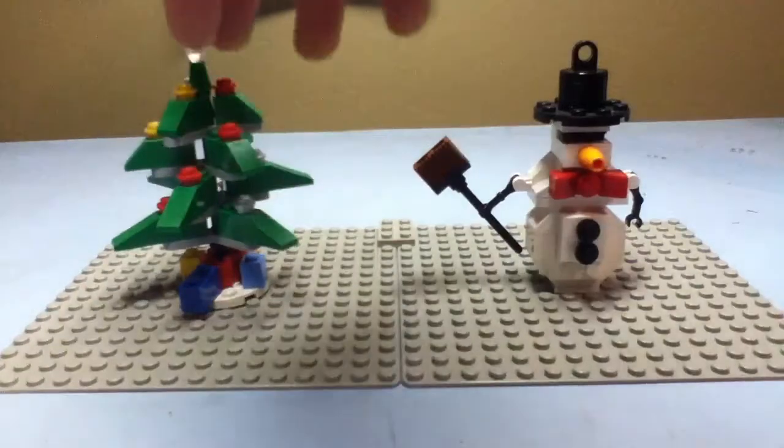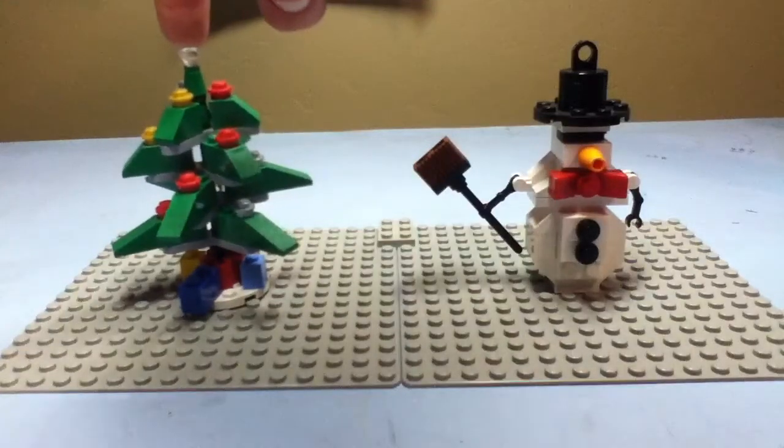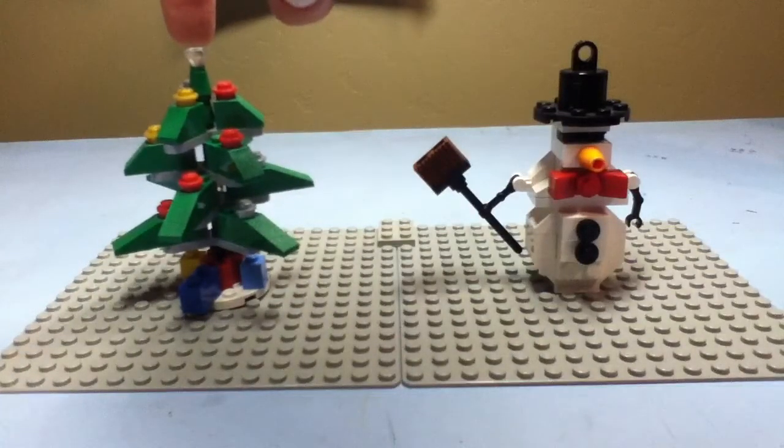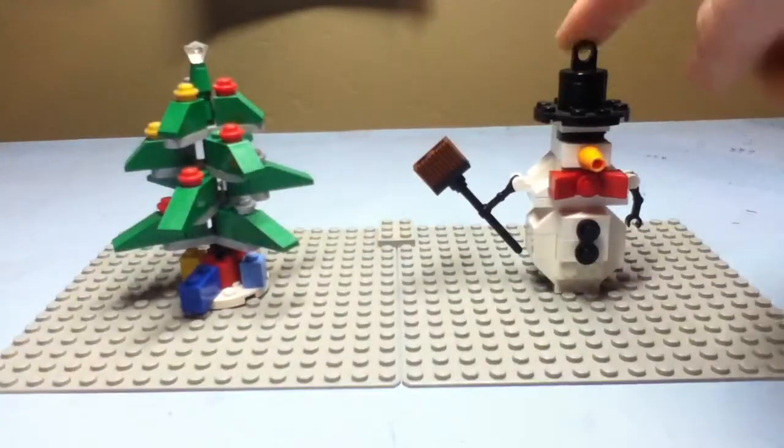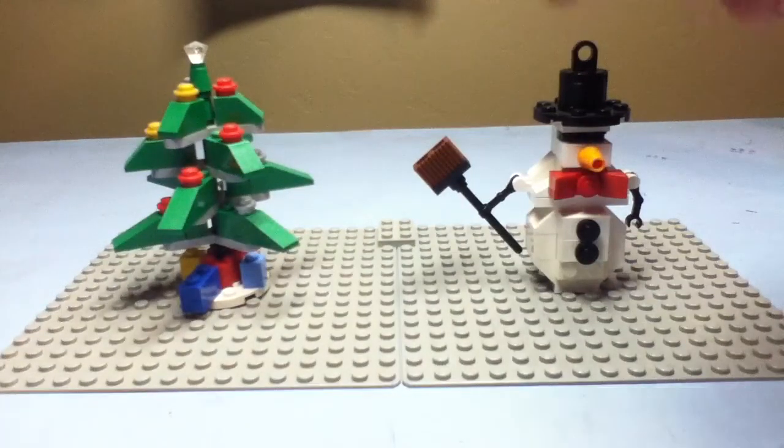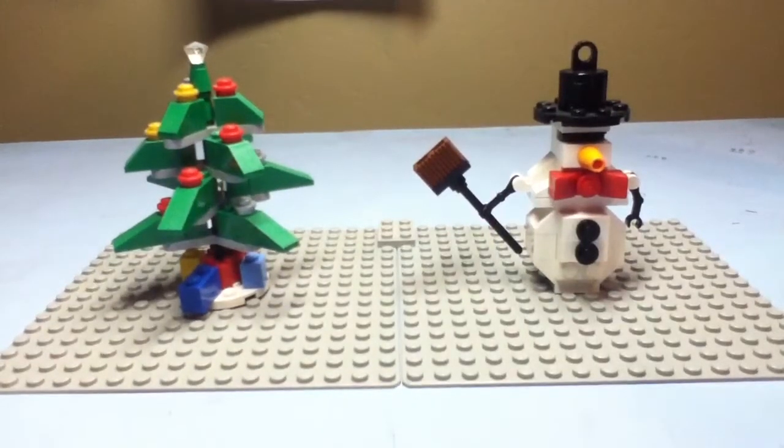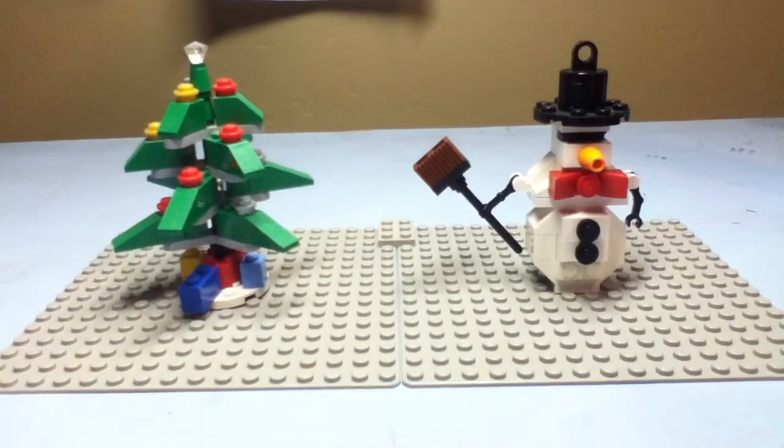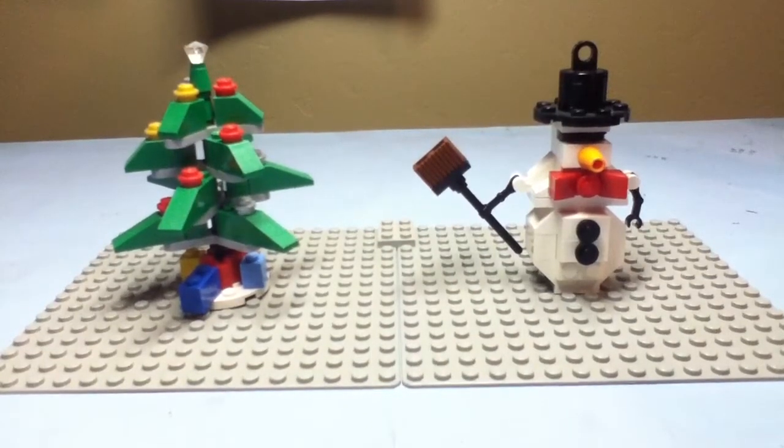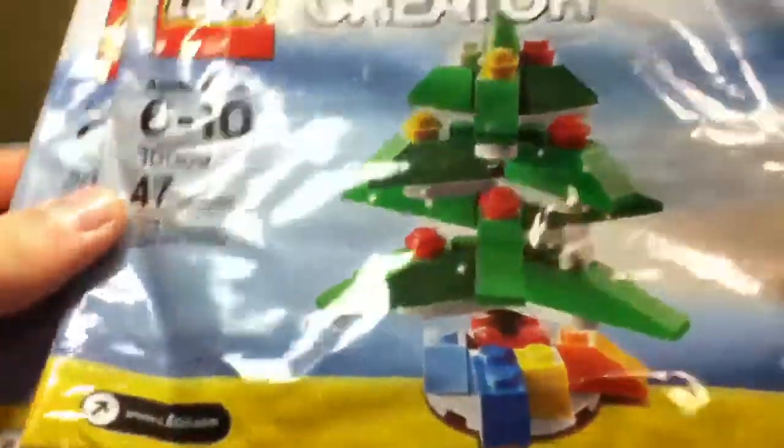The Christmas tree has 47 pieces and it's set 30009, and then the snowman has 44 pieces and it's set 30008. They're both ages 6 to 10 and come in poly bags. So I got this for Christmas in my stocking from Santa.